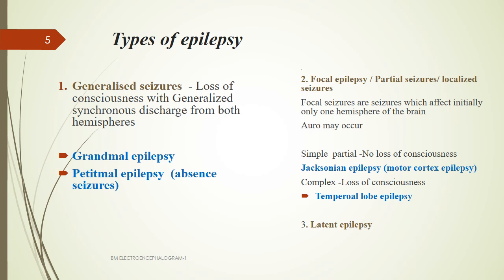The types of epilepsy are generalized seizures and focal seizures. In generalized seizures there is loss of consciousness with generalized synchronous discharge from both hemispheres, further divided into grand mal epilepsy and petit mal epilepsy, also called absence seizures. Focal epilepsy, also called partial or localized seizures, affects initially only one hemisphere of the brain, and can be simple partial or complex partial seizure, with or without loss of consciousness.